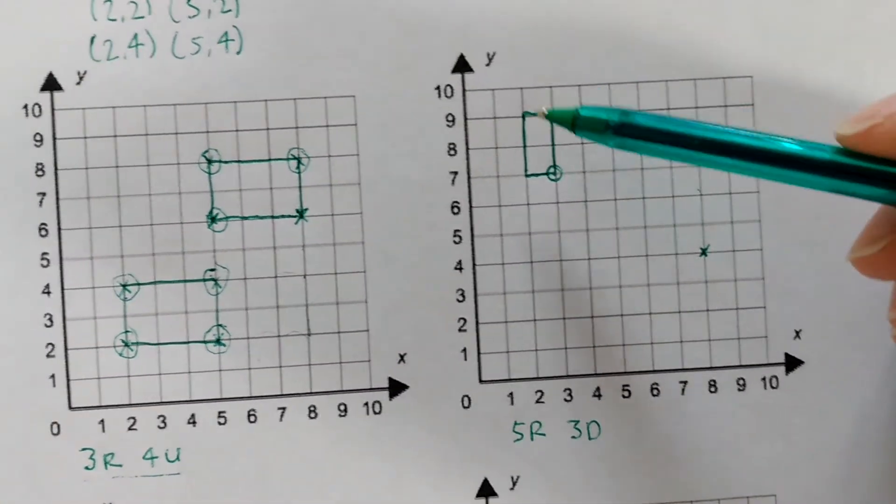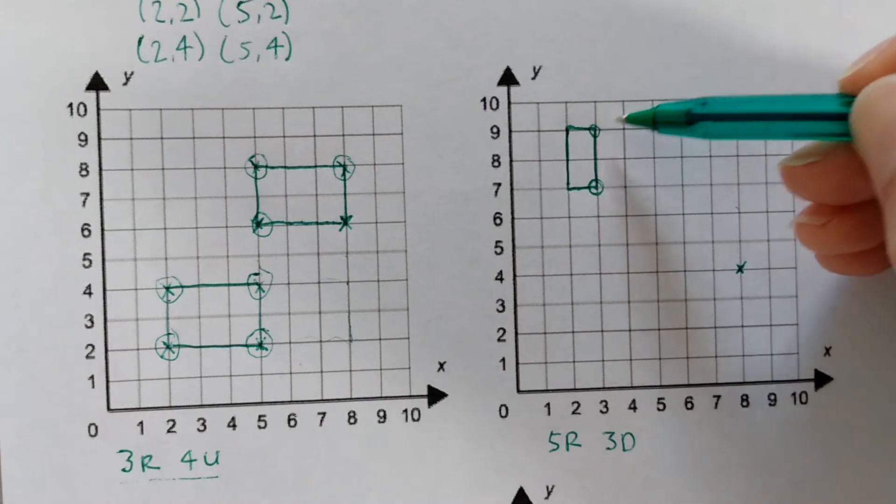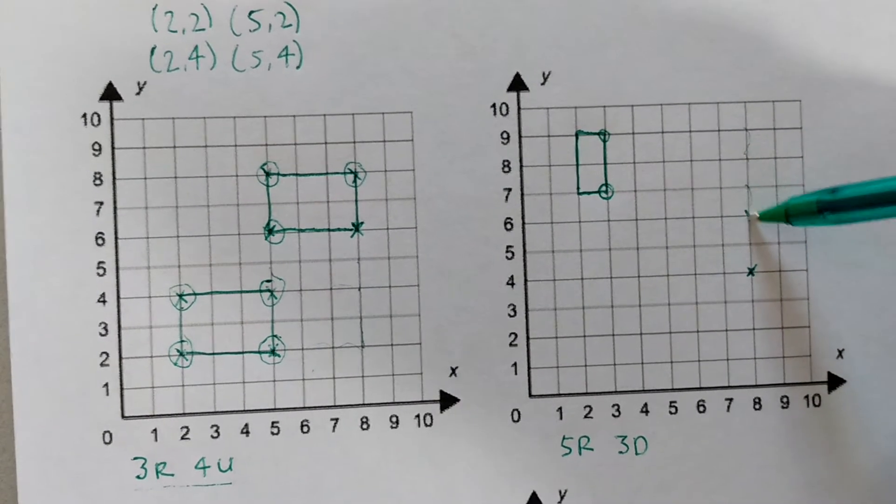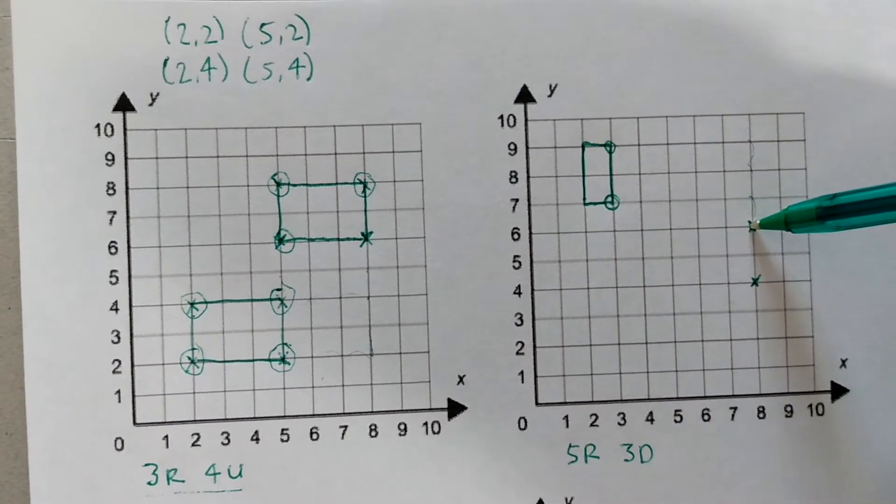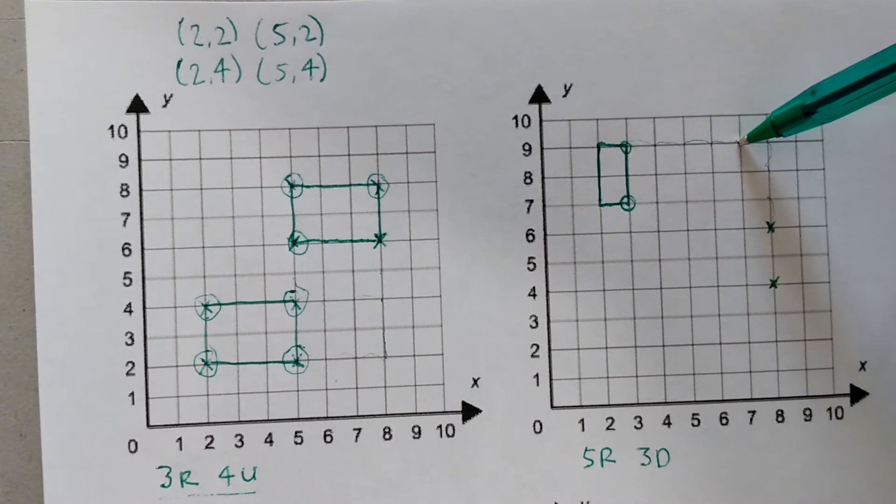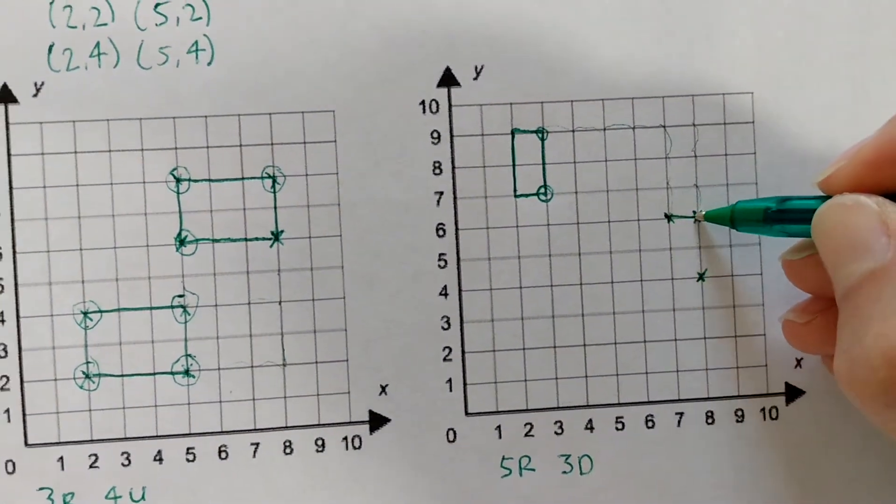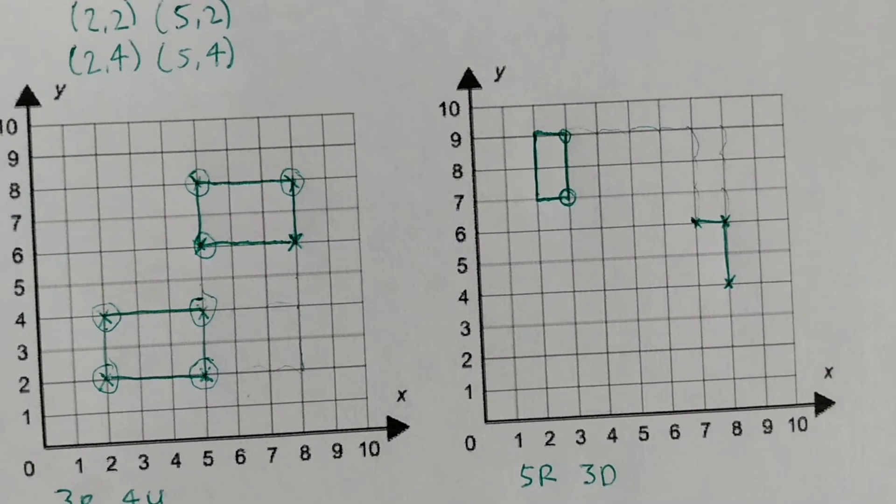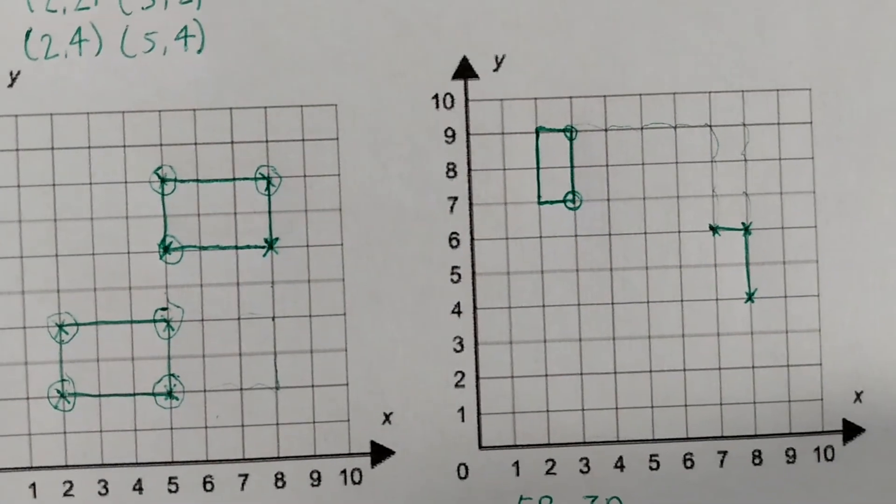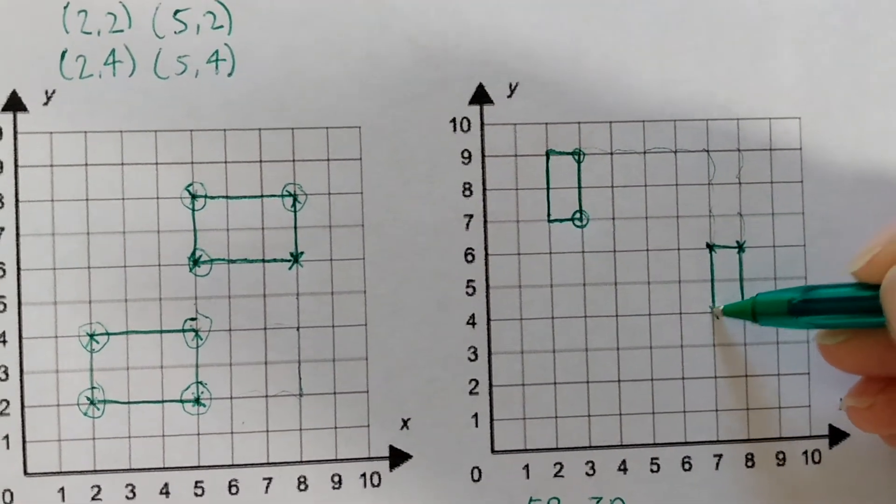Now I could do the same with this guy. 5 right and 3 down. In fact I will just to show you that it works. 1, 2, 3, 4, 5. 1, 2, 3. He's going to end up there. Let's check this guy. 5 right and 3 down. 1, 2, 3, 4, 5. 1, 2, 3. He's going to end up there. Hopefully you can see really clearly where the last corner is going to end up. We can even predict it because we know how to turn 3 coordinate points into a rectangle because we had a go yesterday. So I know it's going to end up here.